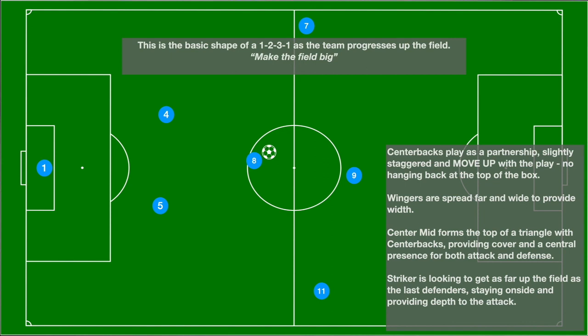The 7 and the 11 are starting to push on, getting closer to the 9, as we'll see in the next slide. Note that the 4 and 5 are moving up the field to support the 8, making a triangle in the middle of the field. This gives you defensive stability in case the ball is lost in transition, but also gives the 8 an opportunity to pass the ball backwards if met with opposition. For example, the 8 passes back to the 4, who then has an easy pass to spray the ball out to the number 7 as they move up the field.